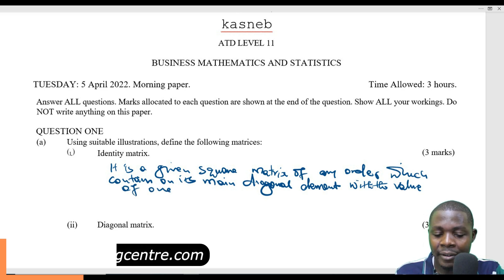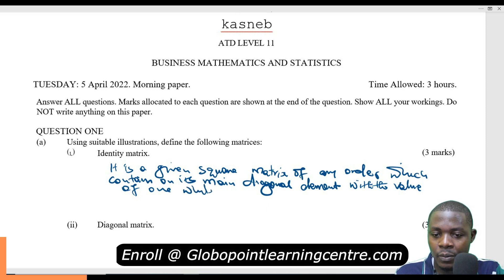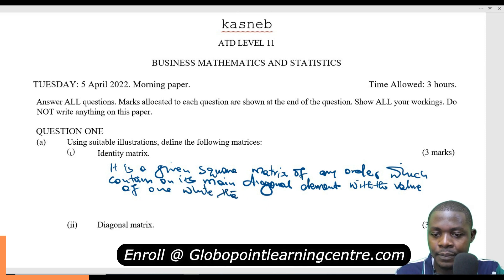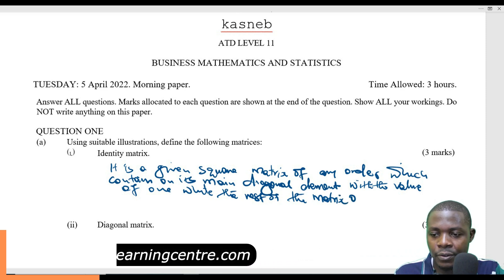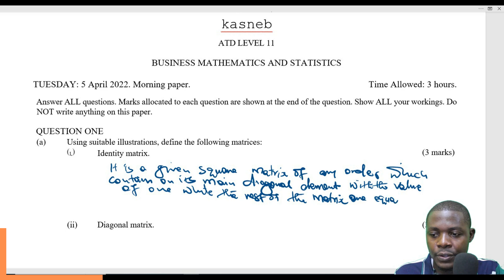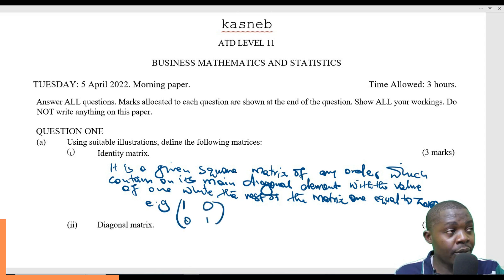While the rest of the matrix is equal to zero. For example, we have 1, 0, 0, 1. That is an example of a 2 by 2 identity matrix.